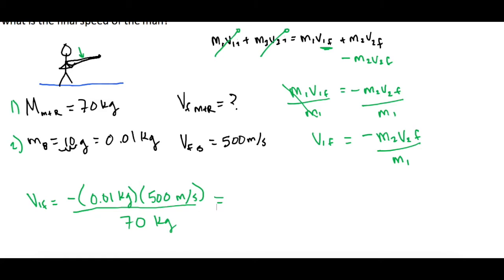So let's do that math real quick here. 0.01 times 500 is 5. So we have negative 5 kilograms times meters per second divided by 70 kilograms.